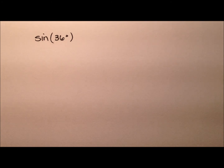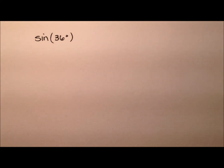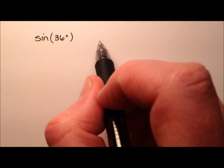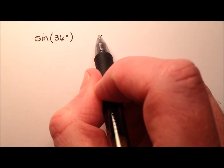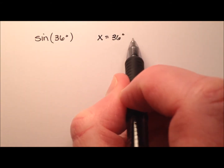In this video, I'm going to work through and show you how to find the exact value for the sine of 36 degrees. There are lots of ways to do this — some geometric, some algebraic approaches. I'm going to take an algebraic approach today, and I'm going to start by saying that x equals 36 degrees.